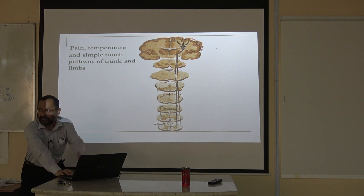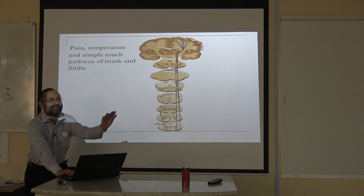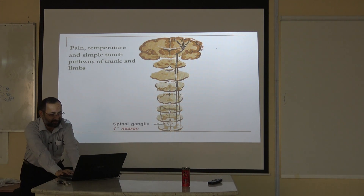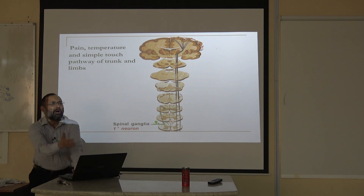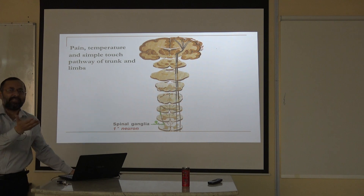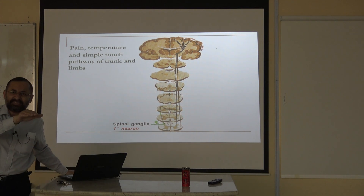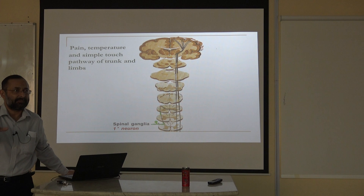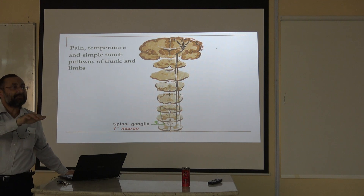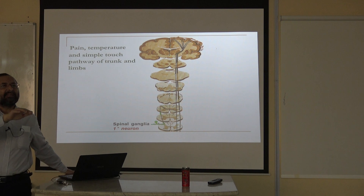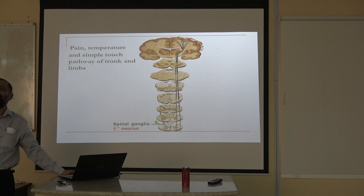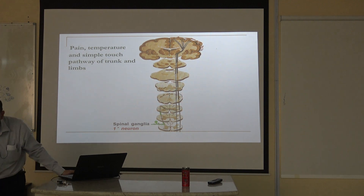Pain, temperature, and simple touch pathways — these are classic pathways. Starting and entering into the spinal cord, after entering, the pathways synapse. The synapse usually occurs after going a few segments up or a few segments down. It is not necessary that they synapse at the same level — some fibers go one segment up, some go one segment down, then synapse.